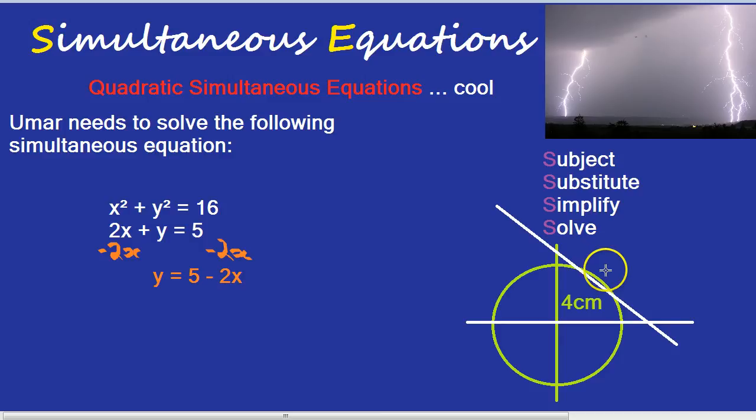And the simultaneous equation actually tells you, when we finally get the solution, it tells you when this line, which is the bottom equation, crosses over the circle, which is X squared plus Y squared equals 16. And so the two solutions, which we should get, are going to be the coordinates. Let's do it in black here and down here as well. So that's an interesting fact.